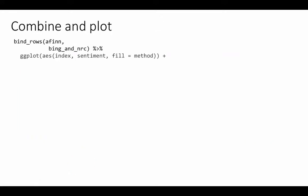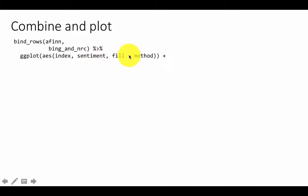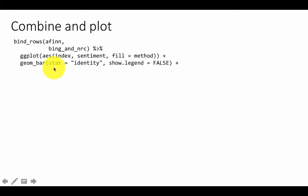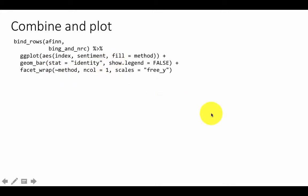Now we can do a ggplot: we plot index (the chunk number) on the x-axis and net sentiment on the y-axis. The color of the bars is based on the method used for sentiment. We do a bar chart with geom_bar and use facet_wrap by method with col equals one, which means the three lexicon plots will appear one below the other as a single column.